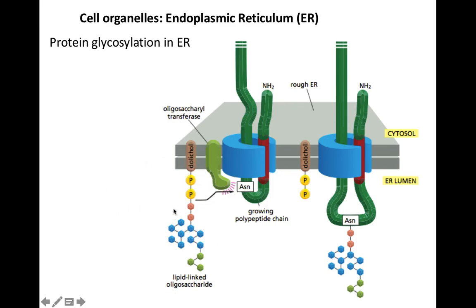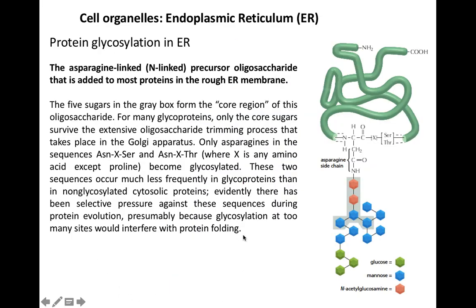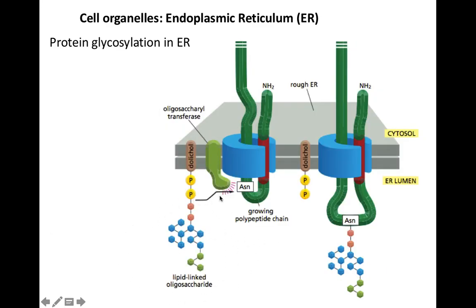In post-translational modifications, multiple bunches of oligosaccharide molecules are attached to the dolichol molecule, resulting in a larger, tree-like structure with lots of carbohydrate molecules. These larger oligosaccharide molecules anchored to dolichol are generally utilized for post-translational modifications, especially in the case of large glycoproteins in the ER, since glycoproteins are heavily glycosylated.